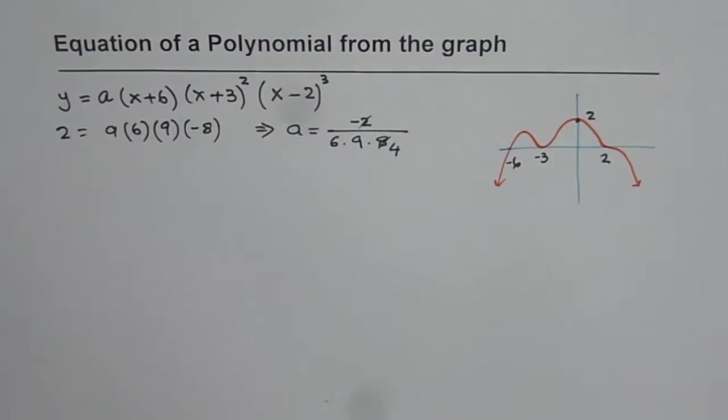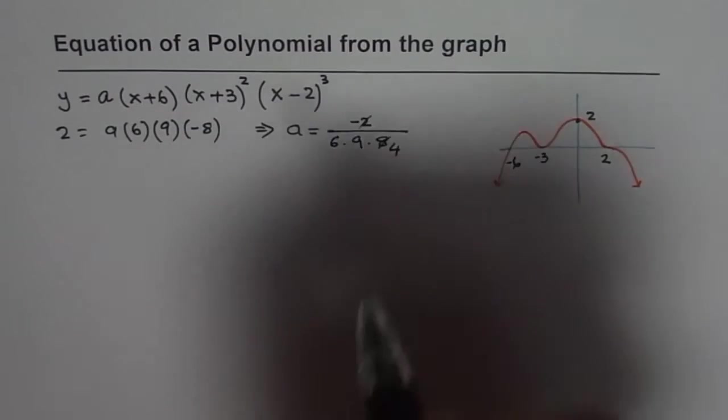Now we can multiply these numbers. So we get 6 times 9 times 4 which is equals to 216.